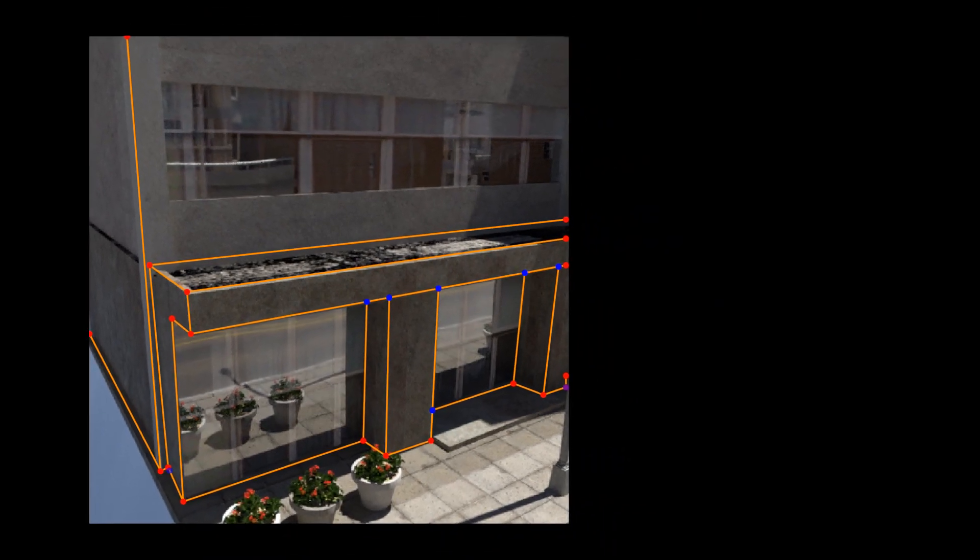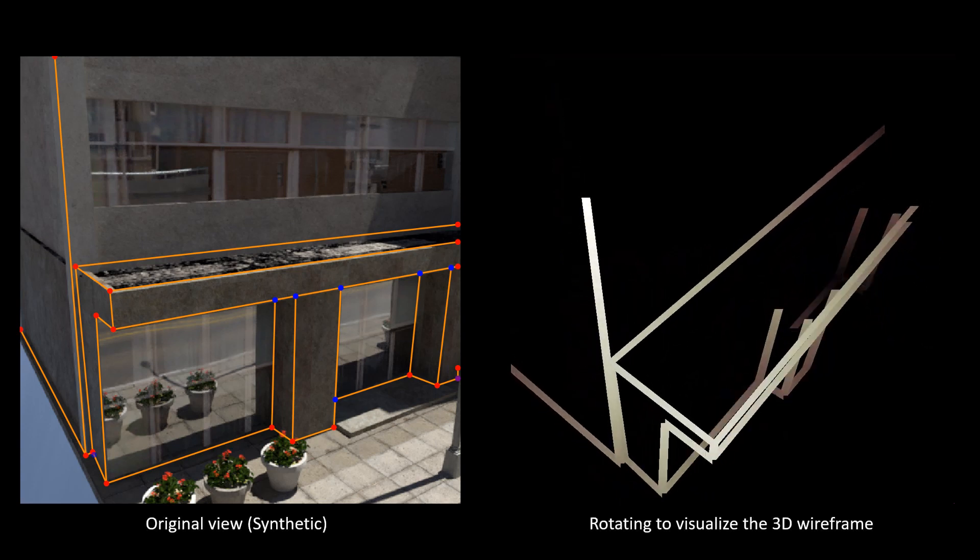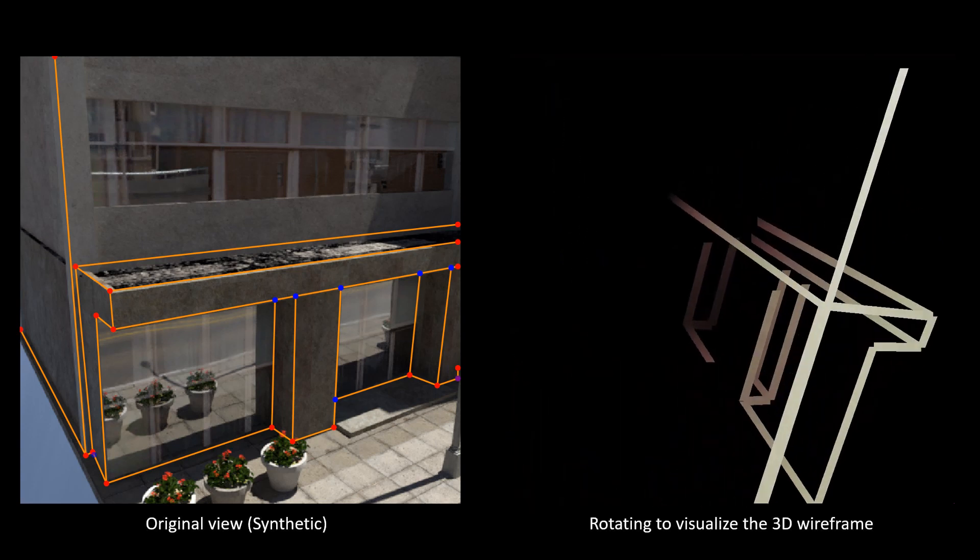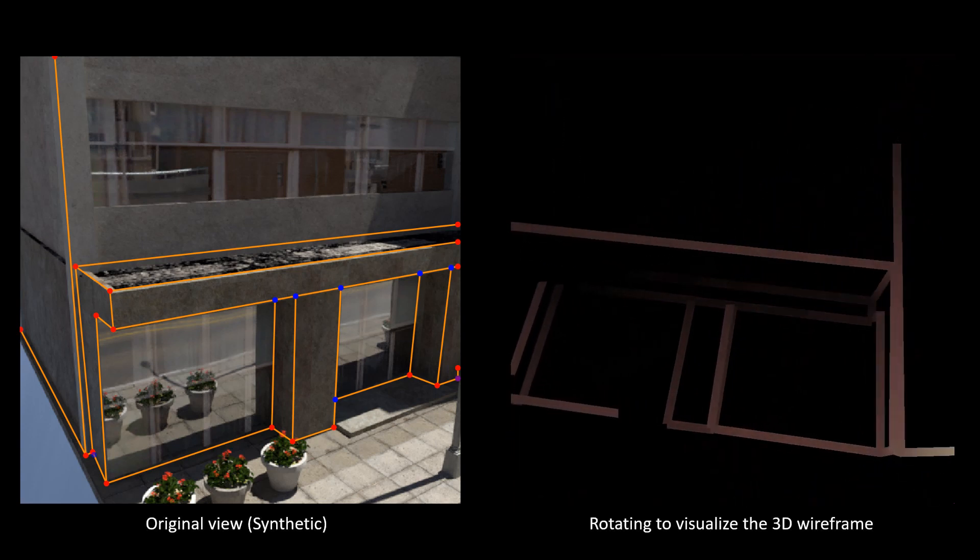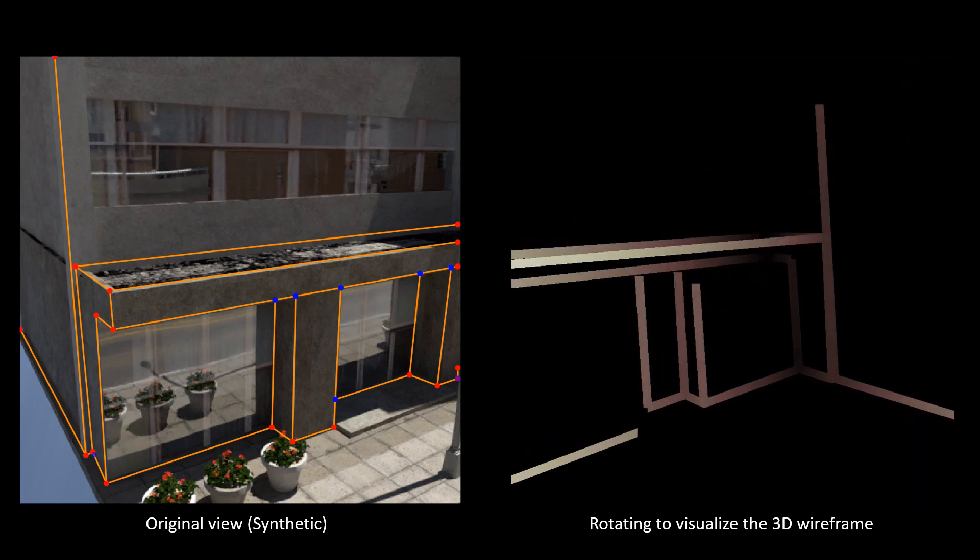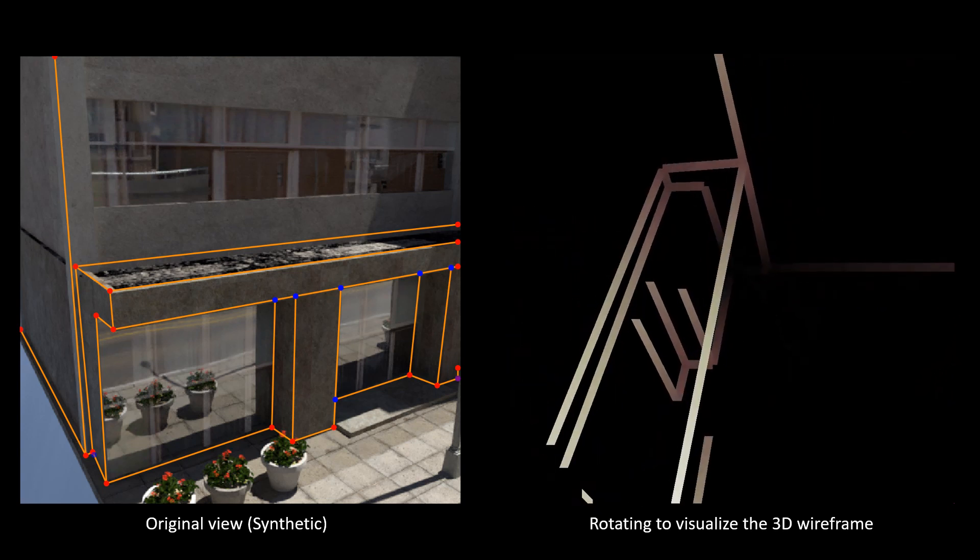The reconstructed wireframe is then lifted to 3D. We can change the position of the camera using our mouse to visualize the full 3D wireframe. The color density of the wireframe stands for its depth.